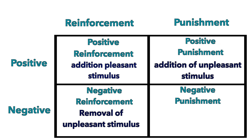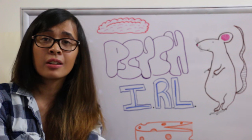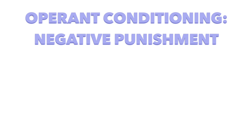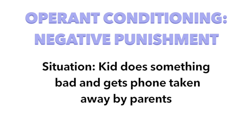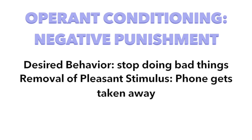Punishment can also be negative. Negative punishment is the removal of a rewarding stimulus. An example of this is when some kid does something really bad and gets their phone taken away. They learn that doing something really bad results in the removal of a pleasant stimulus — their phone getting taken away.